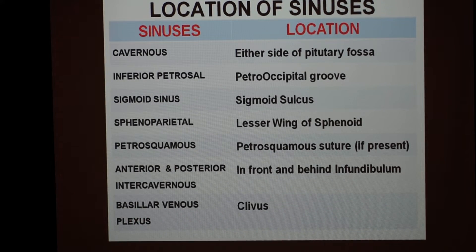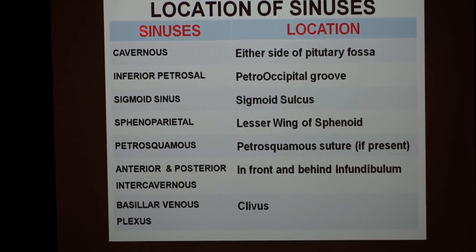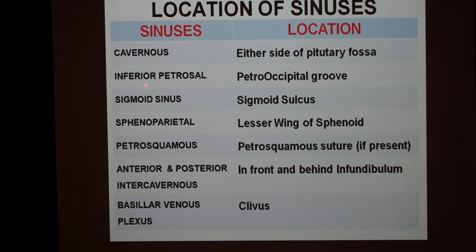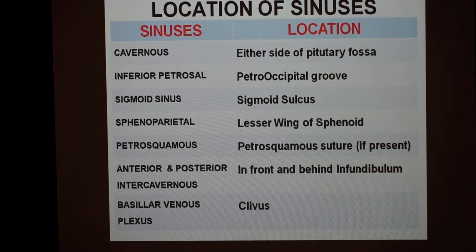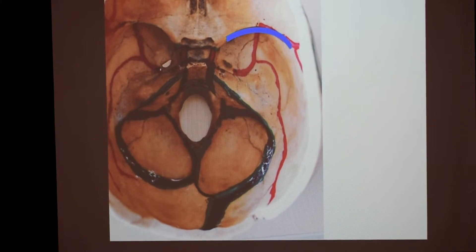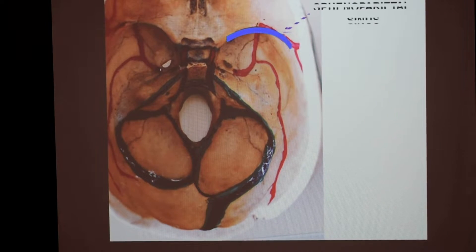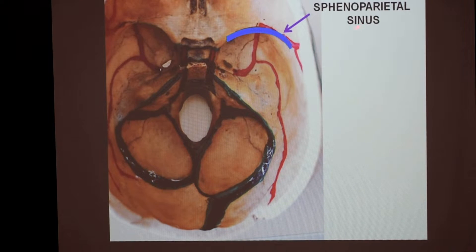Now, the location of the remaining sinuses we have not seen till now: the cavernous sinus, inferior petrosal sinus, sigmoid sinus, sphenoparietal sinus, petrosquamous sinus, anterior and posterior intercavernous sinus, and the basilar venous plexus. The first one — here is the lesser wing of the sphenoid. The venous sinus present between the dura mater of the lesser wing is called the sphenoparietal sinus.